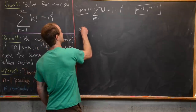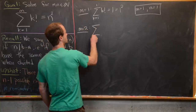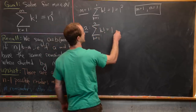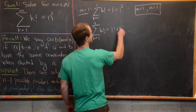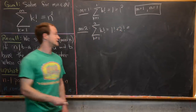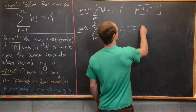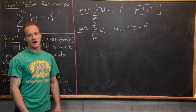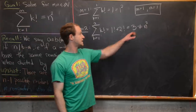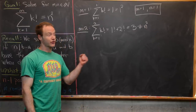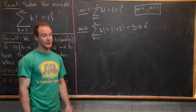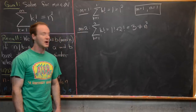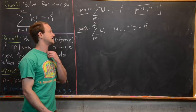For m equals 2, the sum from k=1 to 2 of k factorial gives us 1! + 2! = 1 + 2 = 3. That is not a perfect square — we can see that by visual inspection. Also notice it is congruent to 3 mod 5, and we know perfect squares are never congruent to 3 mod 5. So there's no solution for m=2.